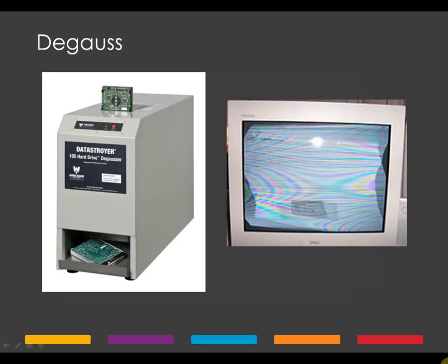Your final option when destroying confidential records on magnetic media is to degauss the media. This method of destruction involves equipment that applies a strong magnetic field to magnetic media, erasing all recorded data. As storage devices are typically degaussed one at a time, degaussing is a more time-efficient destruction method than overwriting.